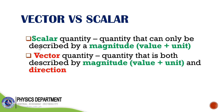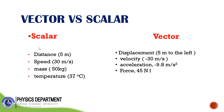A physical quantity can be classified into two: we have the vector and the scalar quantity. Scalar quantity is a quantity that can only be described by a magnitude, while vector quantity is a quantity that has both magnitude and direction. Here are some examples of scalar quantities: a distance of 5 meters, a speed of 30 meters per second, a mass of 50 kilograms, and a temperature of 37 degrees Celsius. Notice that for scalar quantity, it only gives the magnitude.